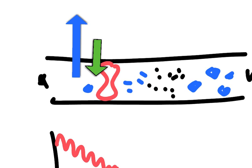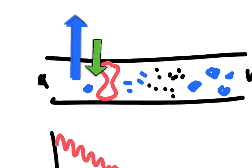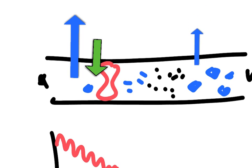The net filtration pressure is the difference between the hydrostatic pressure and the osmotic pressure. We forced water out here into the capillary bed — you reduce the volume and you reduce the pressure. The hydrostatic pressure will fall from the arterial end to the venous end because of the resistance and also the loss of fluid. Because the fluid's gone out, the hydrostatic pressure will fall like a leaky pipe.